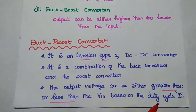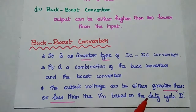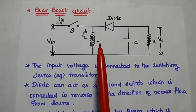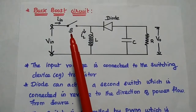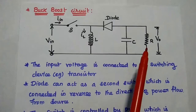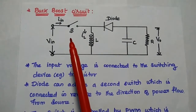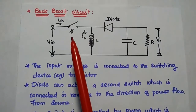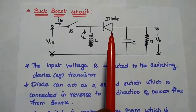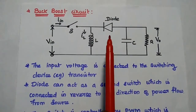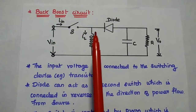What is meant by duty cycle? It represents the on-time of the active device in the circuit. Next, the circuit diagram of the buck-boost converter. It consists of a switching device, inductor, diode, capacitor, and resistor. Here the switching device is nothing but a transistor. MOSFET is widely used for high-frequency conversion. The diode acts as a second switch, which is connected in reverse to the direction of power flow from the source.